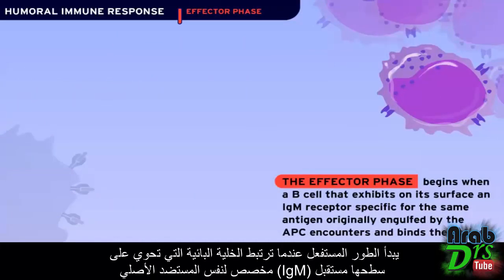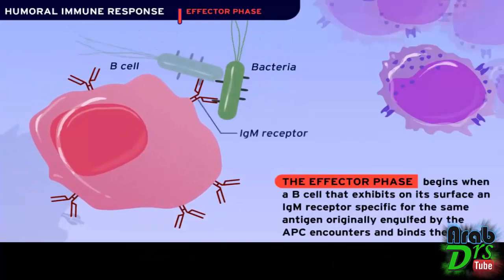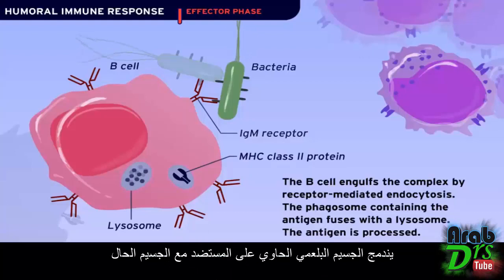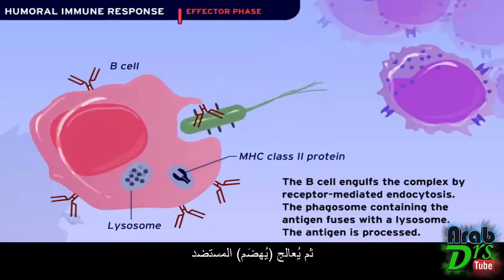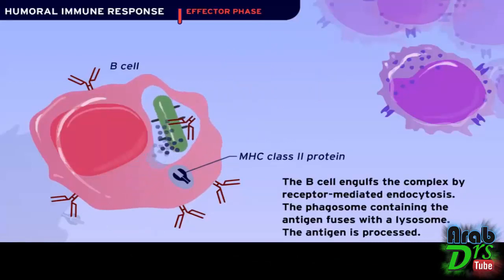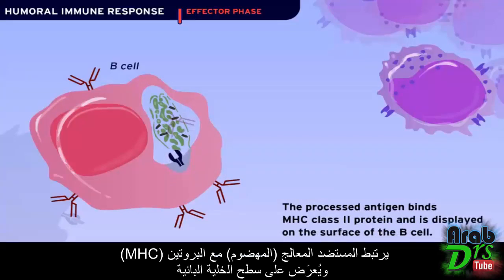The effector phase begins when a B cell that exhibits on its surface an IgM receptor specific for the same antigen originally engulfed by the APC encounters and binds the antigen. The B cell engulfs the complex by receptor-mediated endocytosis. The phagosome containing the antigen fuses with a lysosome, and the antigen is processed. The processed antigen binds MHC class 2 protein and is displayed on the surface of the B cell.